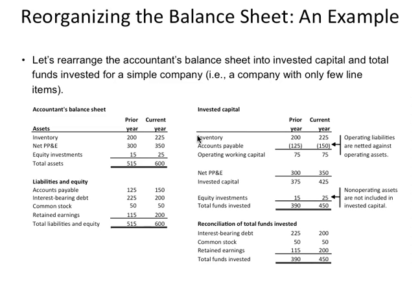I just read that a student sued her professor because she got a C and said it destroyed her life. I'm on record saying that if you get a C for making the mistake I'm about to tell you, it's recorded that I told you not to make it. The very first step in this process is to label the statements one, two, three, and four.